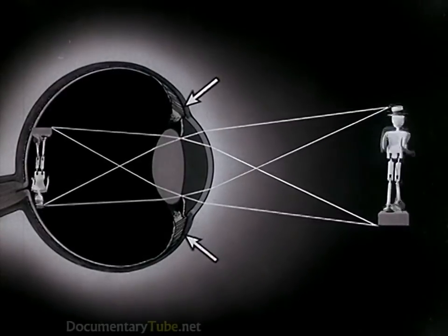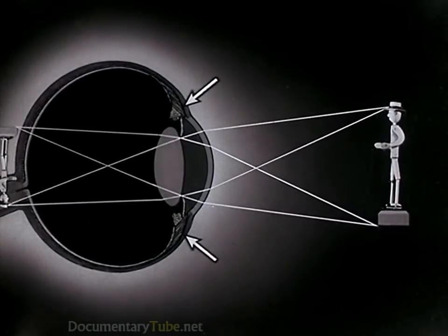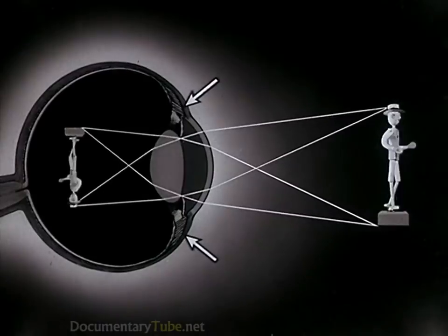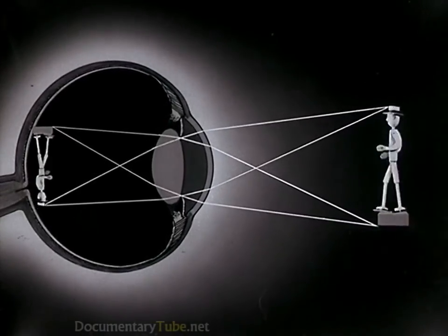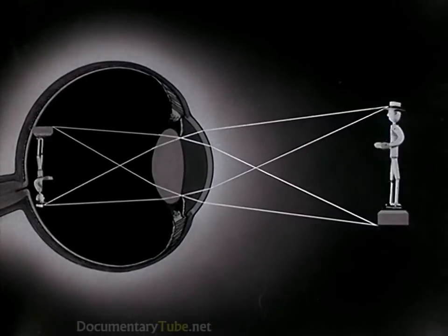The muscles attached to the rim of the lens regulate the curvature of the lens surface so that the image falls on the retina and is seen sharply.